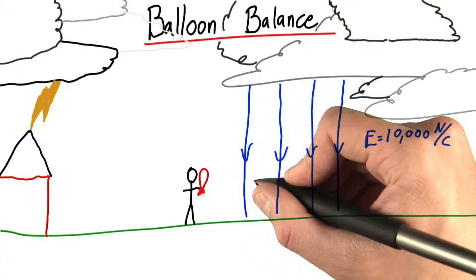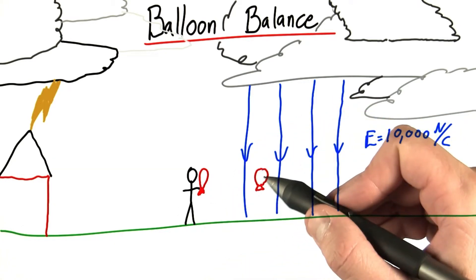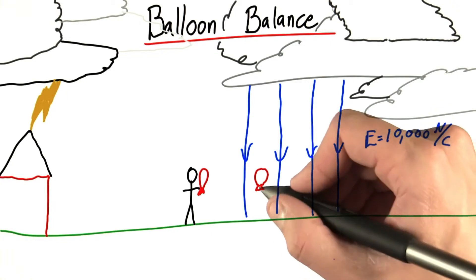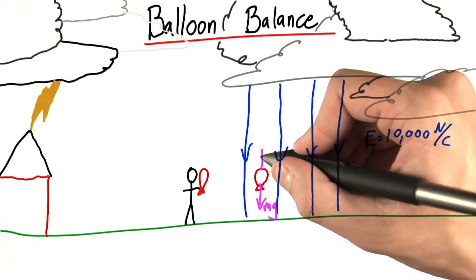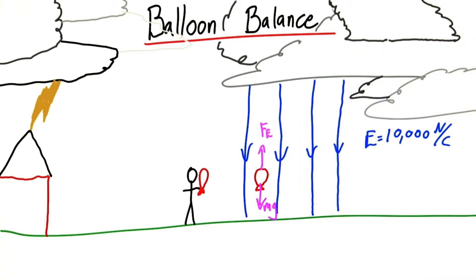By doing this, you're hoping that you can take your balloon and have it suspend itself inside this region of electric field in such a way that the weight of the balloon downwards is exactly balanced by an electric force upwards.